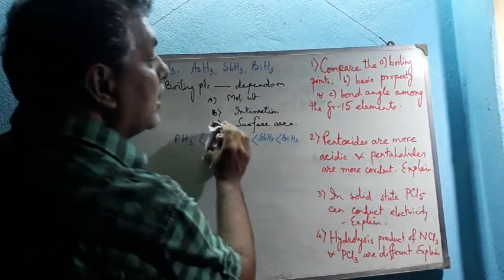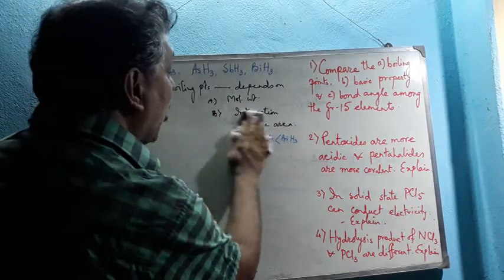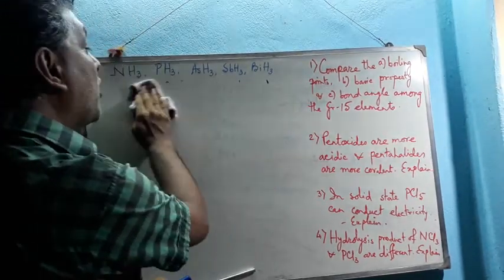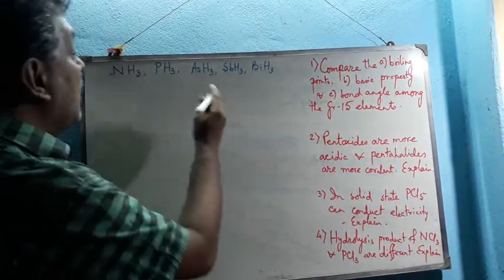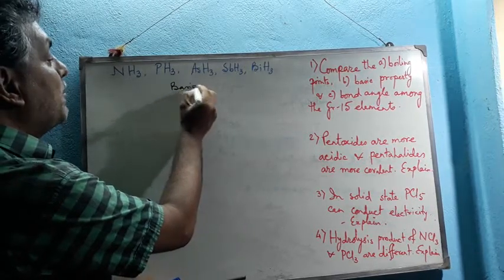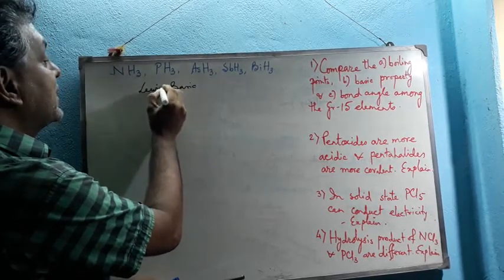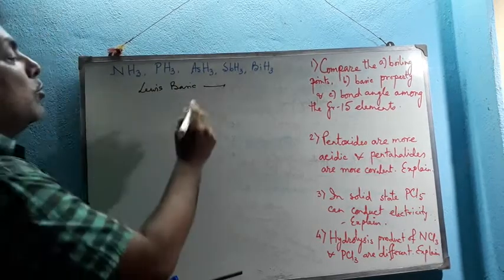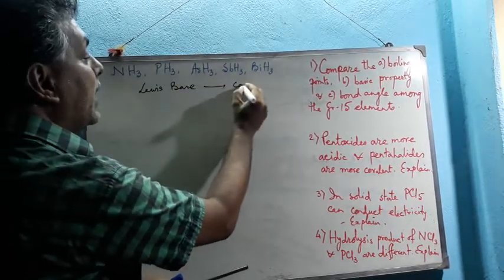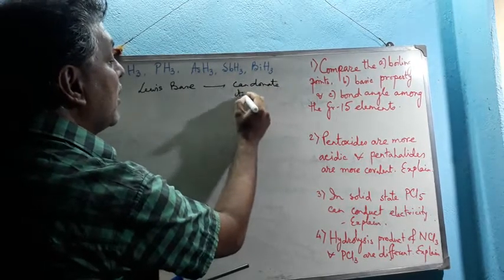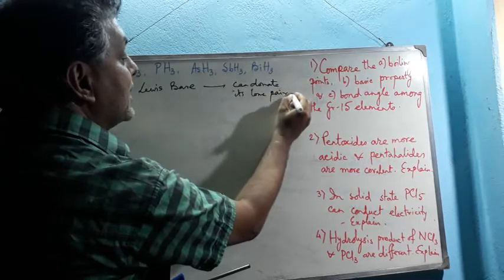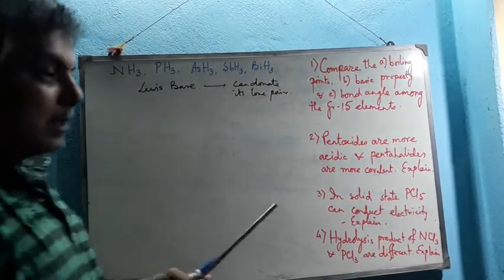Now we come to explain the basic property of these hydrides. A substance is a Lewis base if it can donate its lone pair to another substance. We know that there are actually two types of explanations for the basic property of Group 15 hydrides.